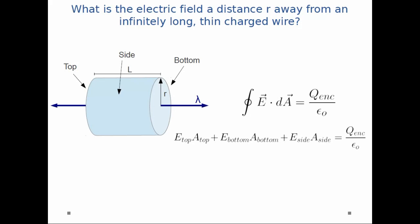If I look at each piece separately, I notice the flux through the top and the flux through the bottom are both zero. So I'm left with the flux through the side equals q enclosed over epsilon naught. Now why is that?